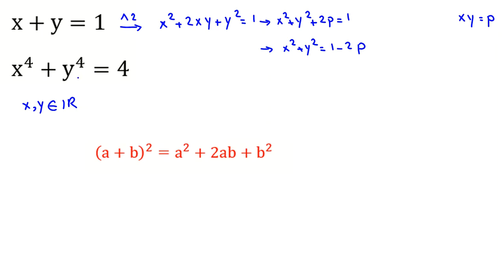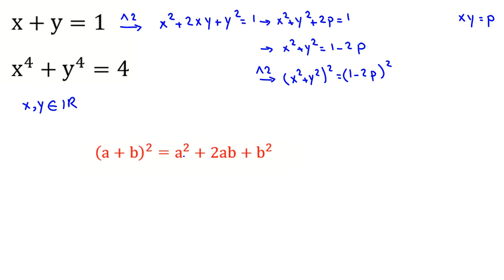So if we take 2p to the right-hand side, x squared plus y squared equals 1 minus 2p. We want to reach x to the 4 plus y to the 4, so we raise both sides again to the power of 2.